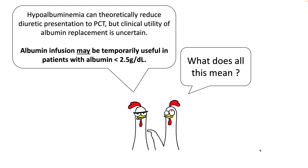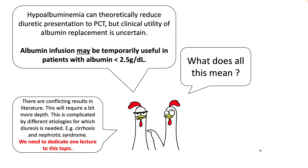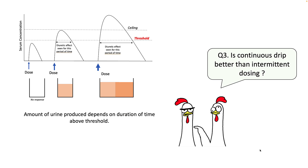In a nutshell, hypoalbuminemia can theoretically reduce diuretic presentation to the PCT, but the clinical utility of this phenomenon is uncertain. Albumin infusion may be temporarily useful in patients with albumin less than 2.5 g/dL. Since there are conflicting results in the literature, this requires much more in-depth discussion and we'll try to capture it in another lecture.